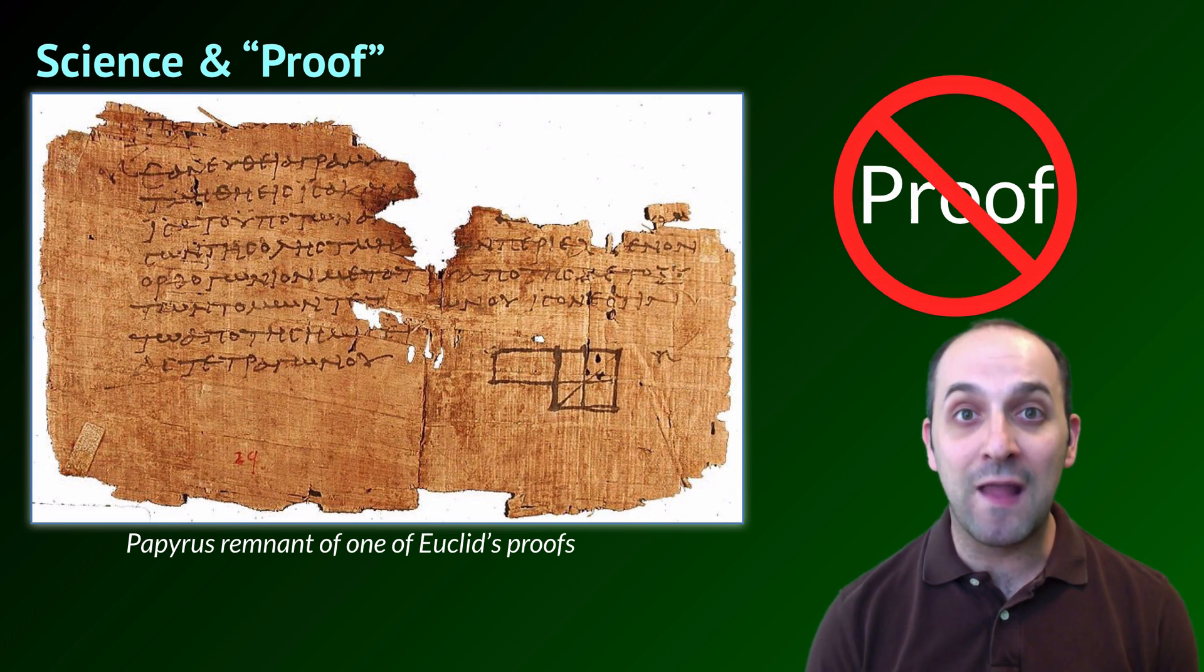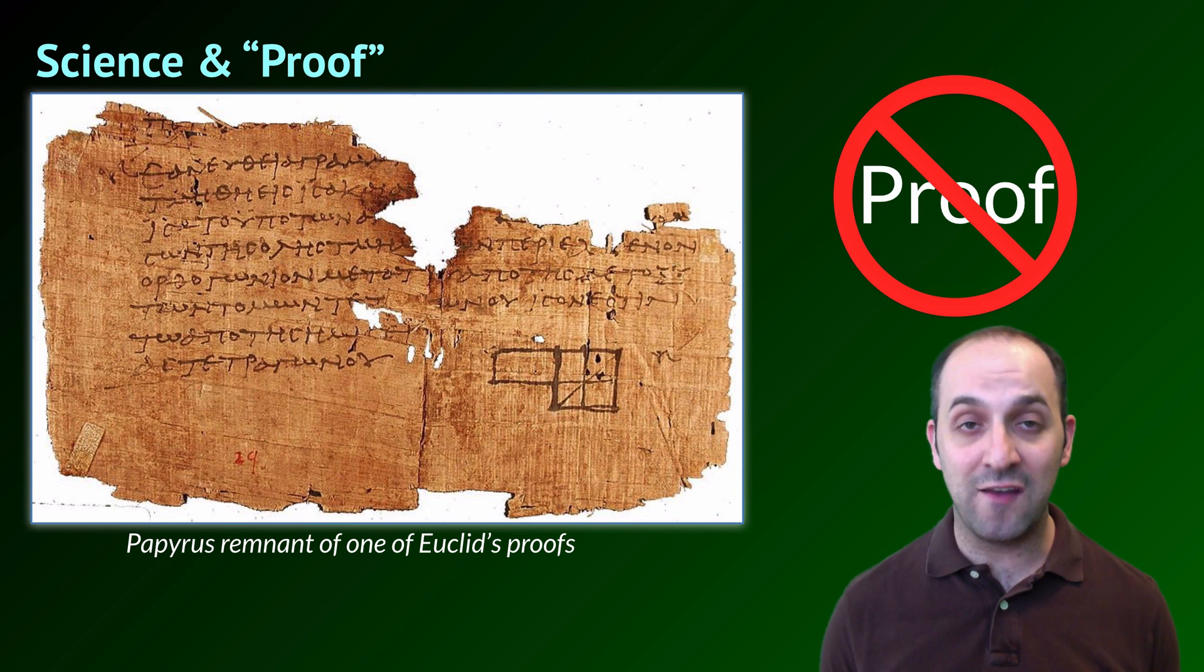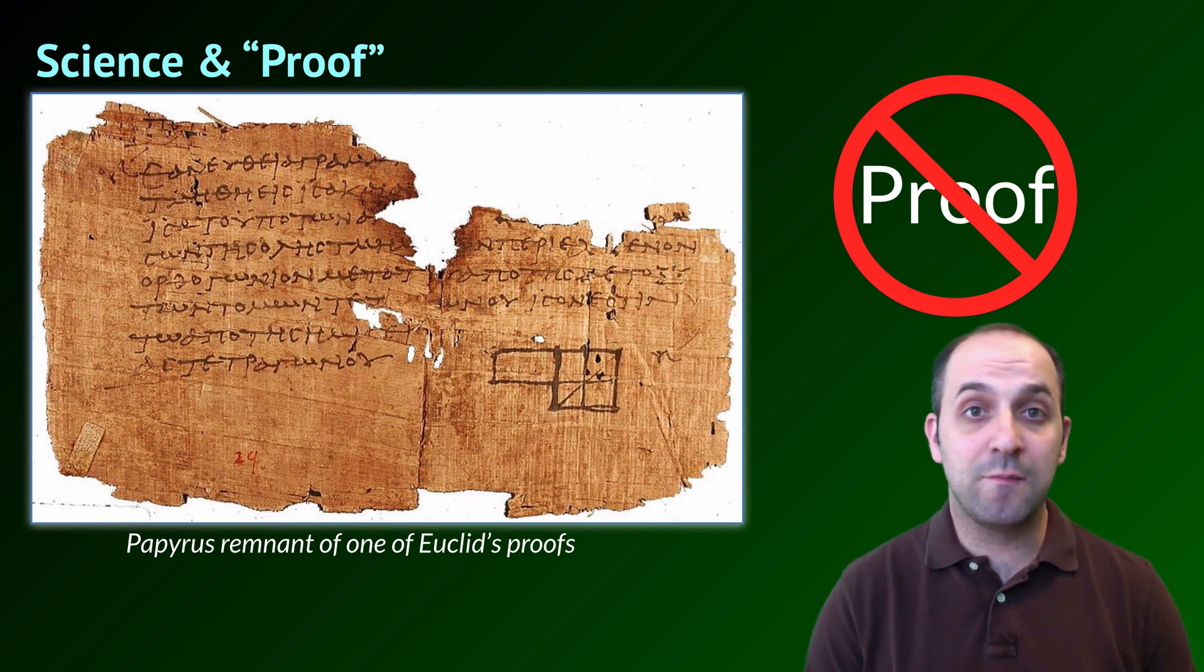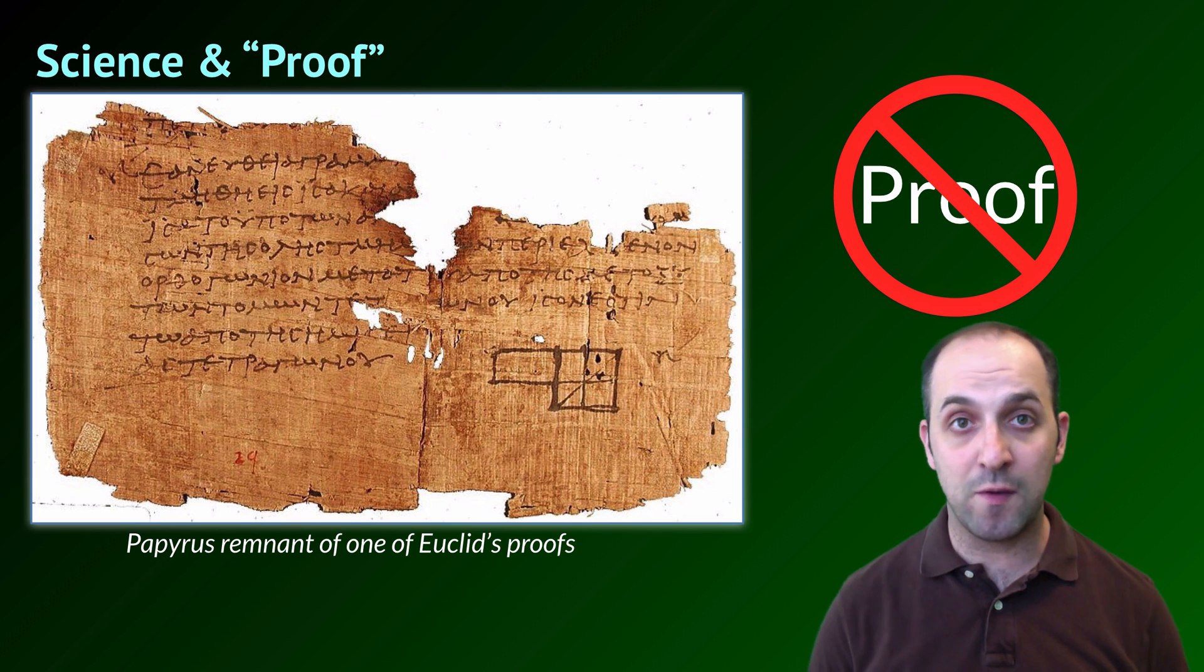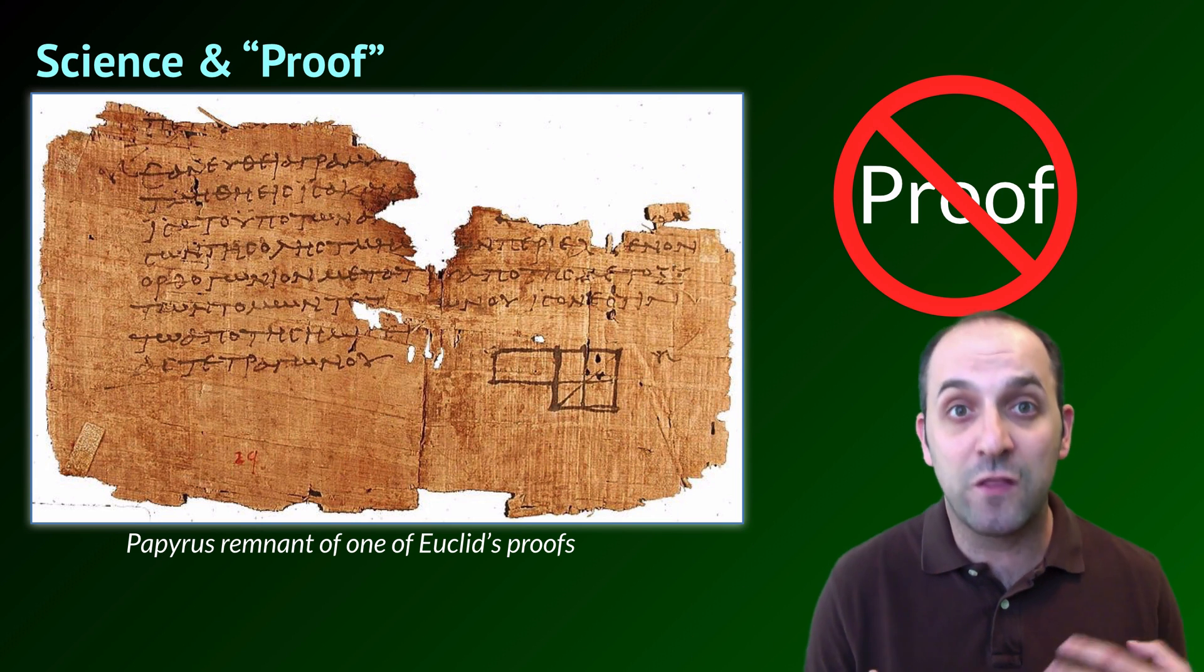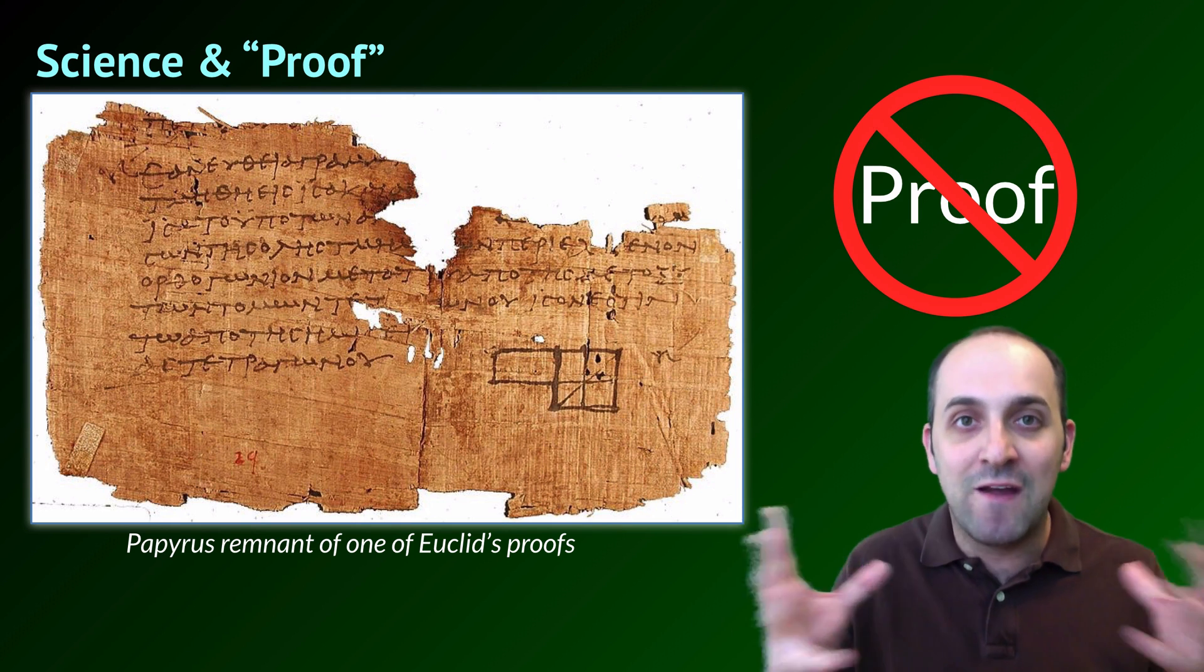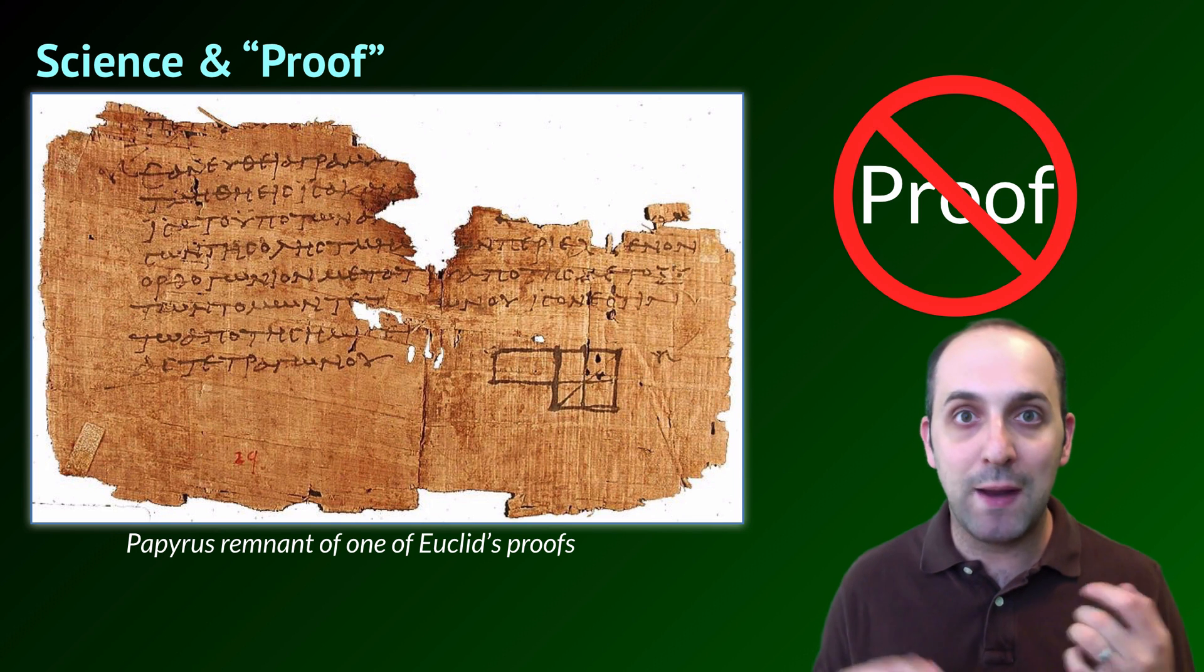Scientific thoughts are by definition not actually provable. They're testable, they can be supported by experiments, they can be supported by hundreds of years of experiments and findings in all sorts of different fields, at which point we would call these scientific thoughts theories. But you can never conclusively prove any piece of science.